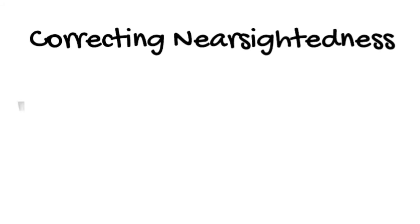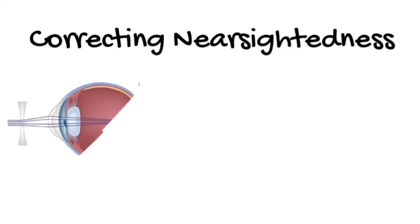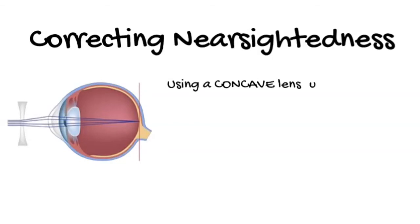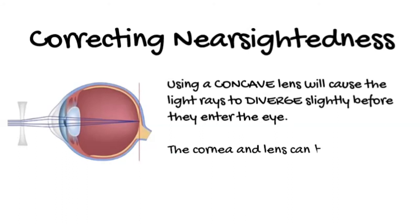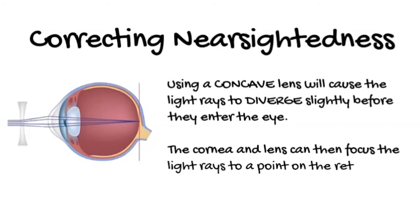To correct nearsightedness, we need to spread the rays out slightly before they enter the eye. Using a concave lens will cause the light rays to diverge slightly before they enter the eye. The cornea and lens can then focus the light rays to a point on the retina.